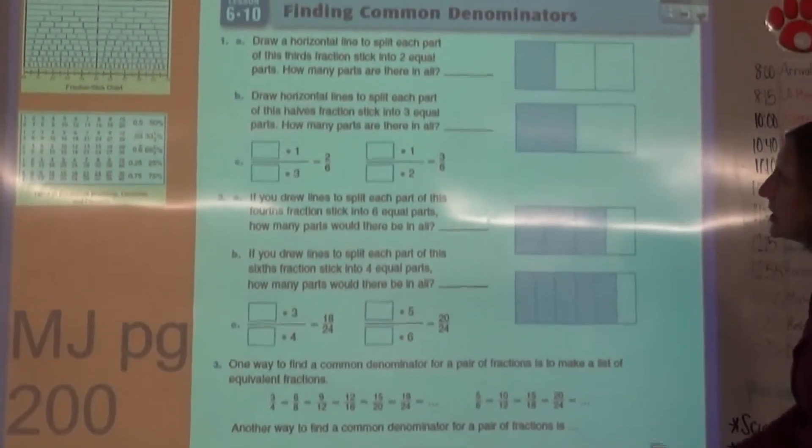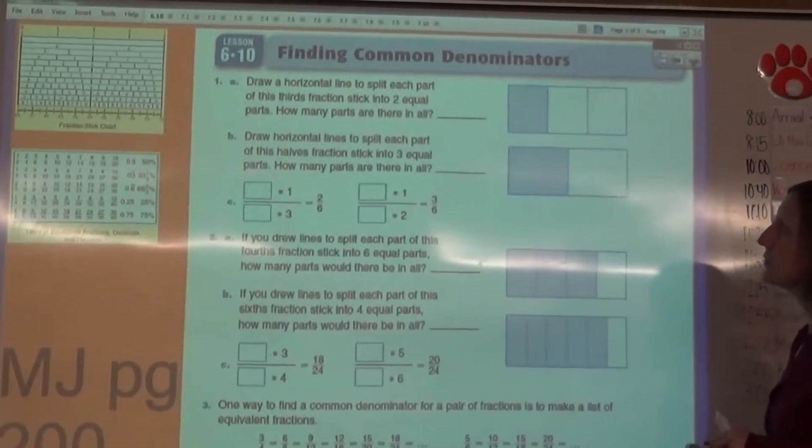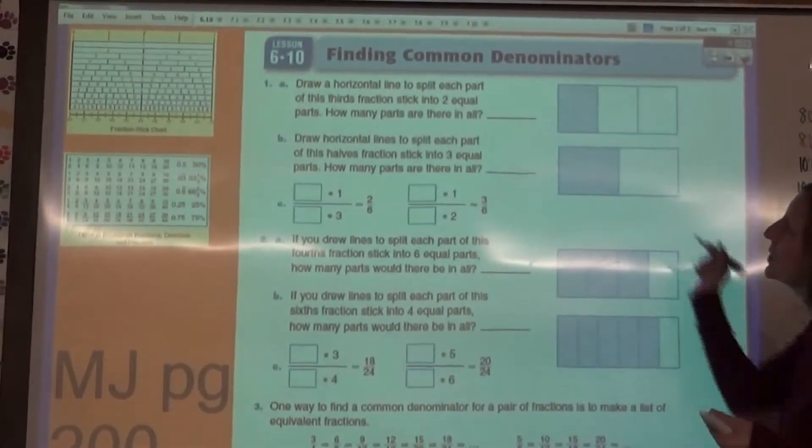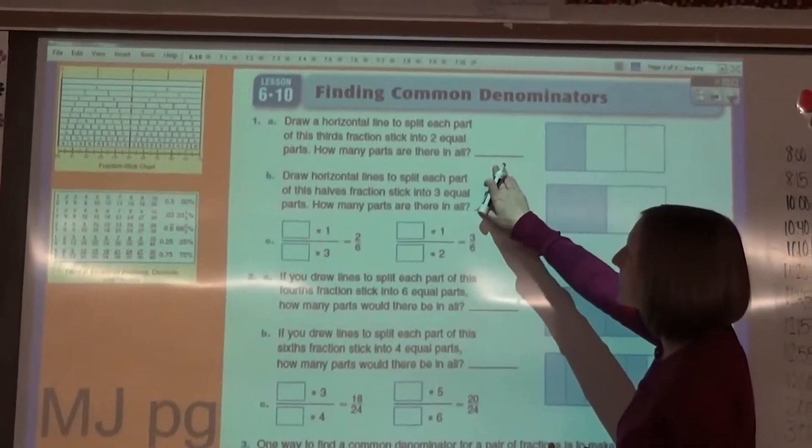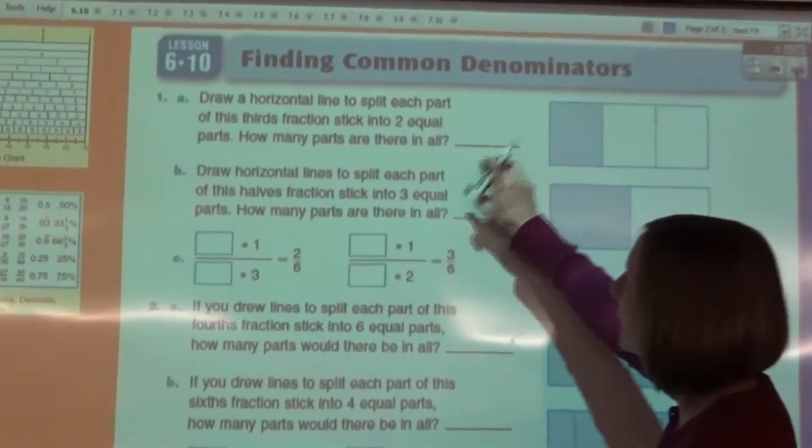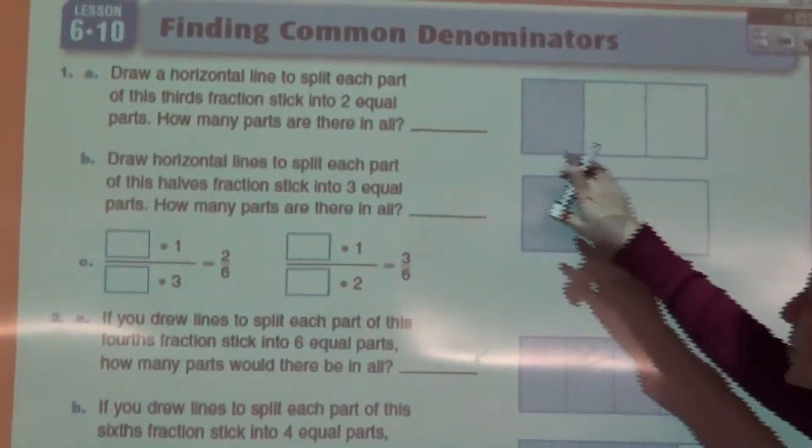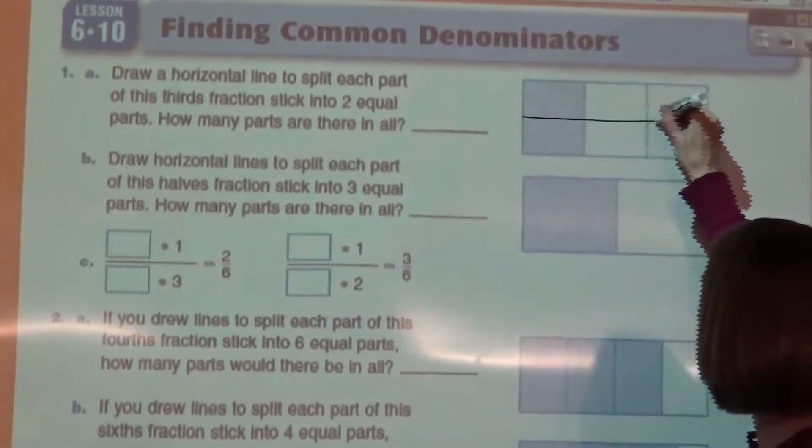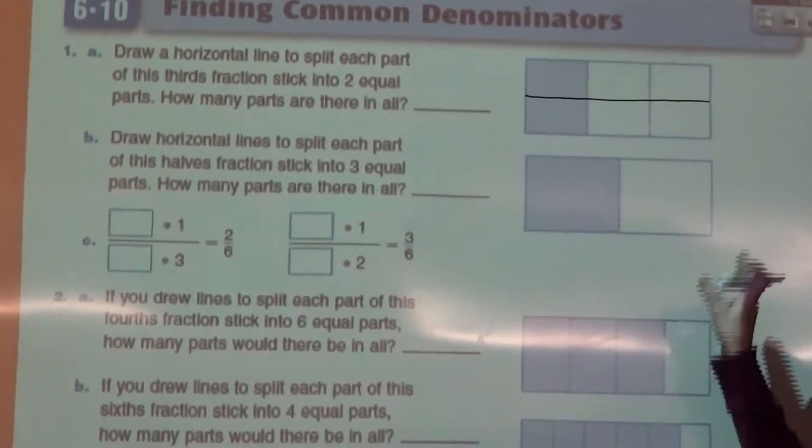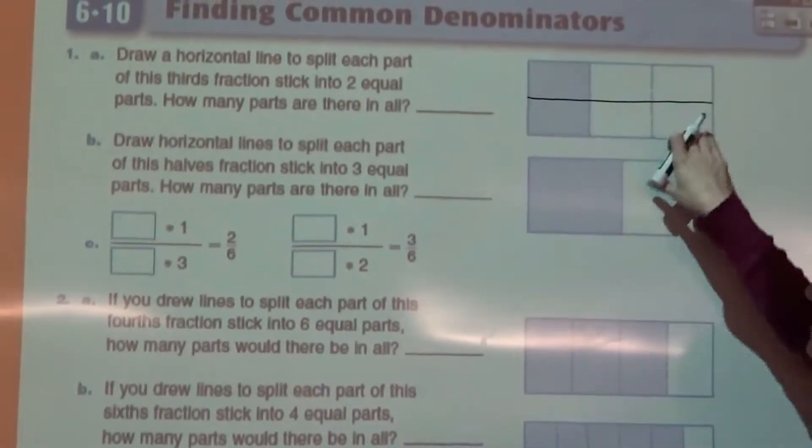On page 200, you are going to be drawing some lines and looking at how fractions are equivalent. Number 1A wants you to draw a horizontal line to split each part of this thirds fraction stick into two equal parts. So right now we have thirds with one third colored in. We want to split it into two equal pieces by drawing a horizontal line. How many parts are there in all now? Now we have one, two, three, four, five, six parts.